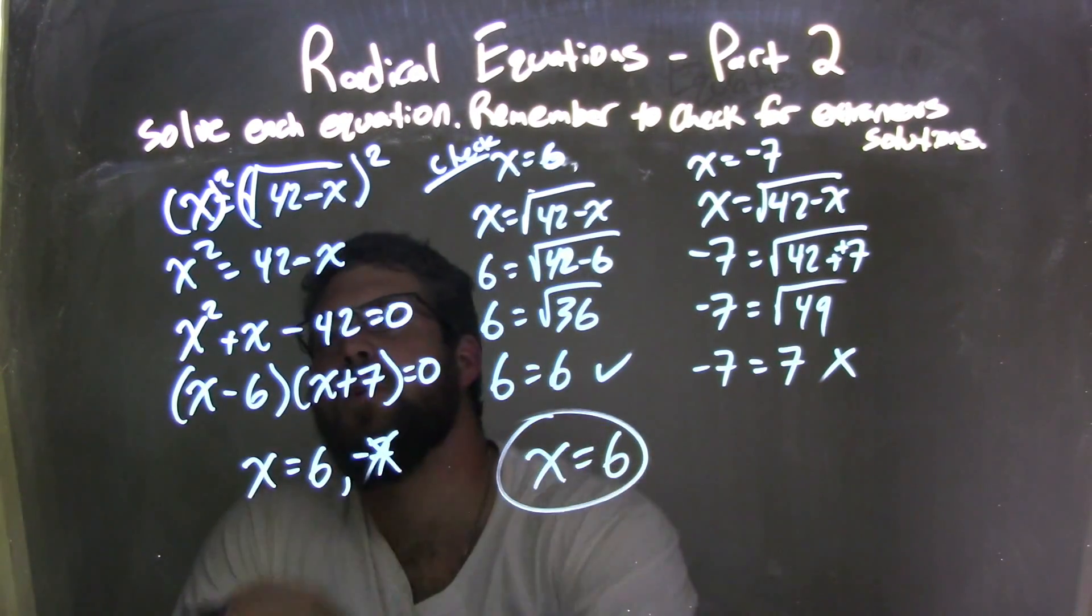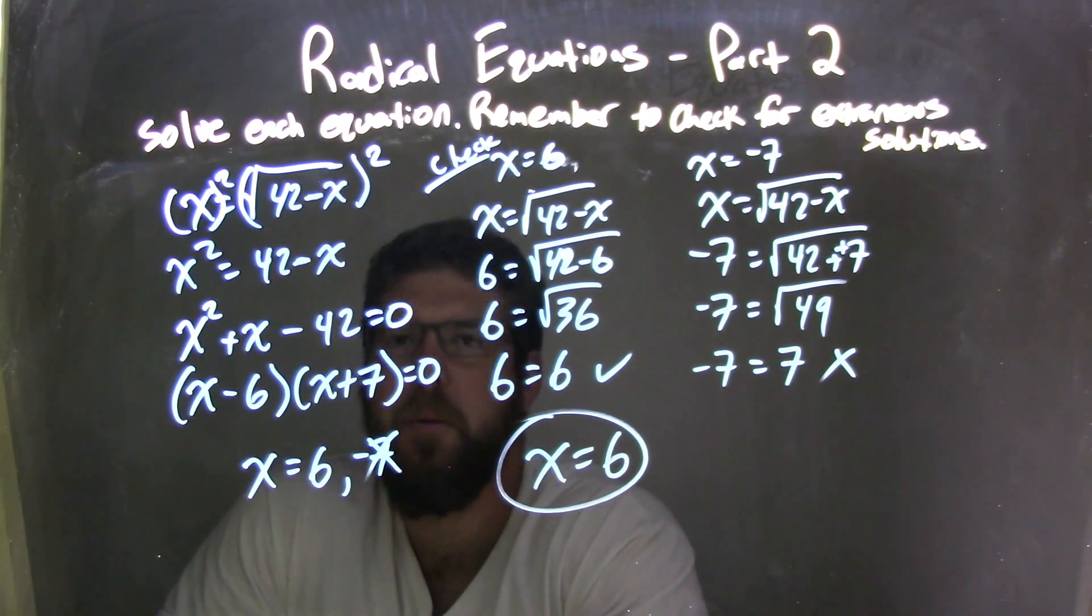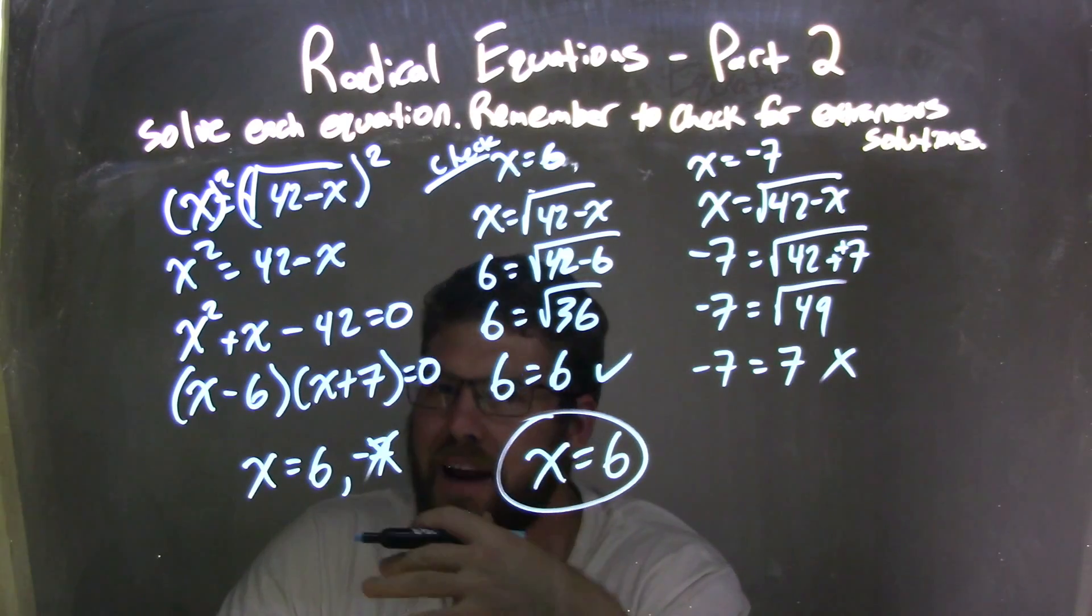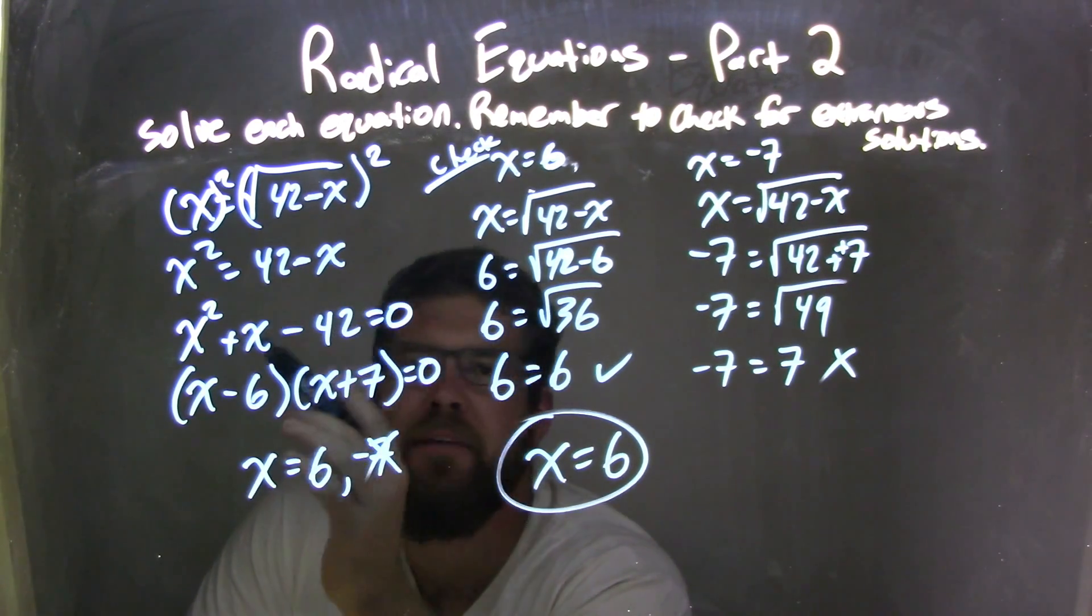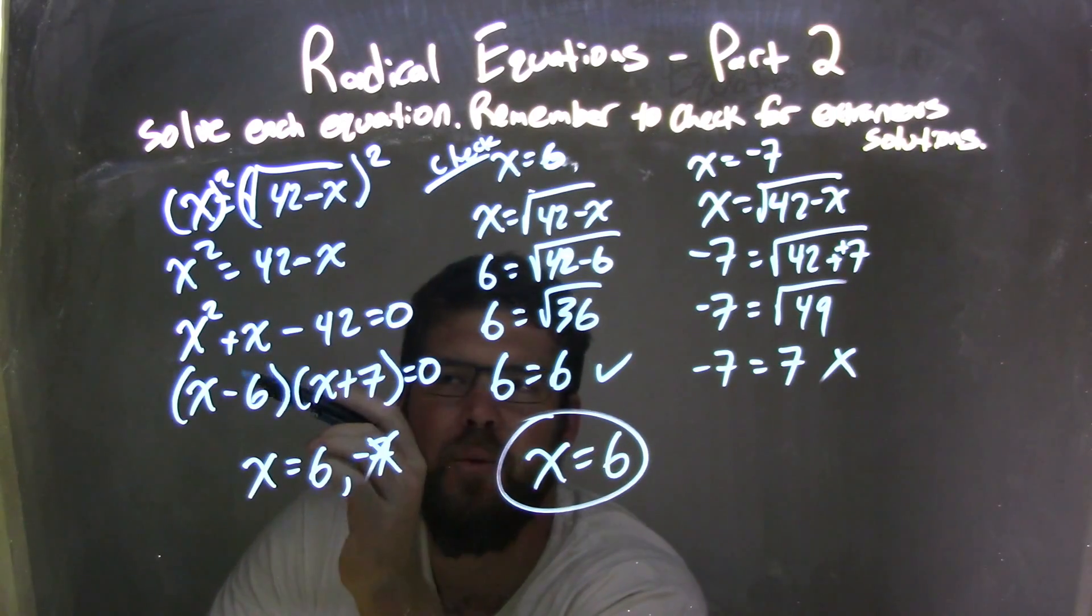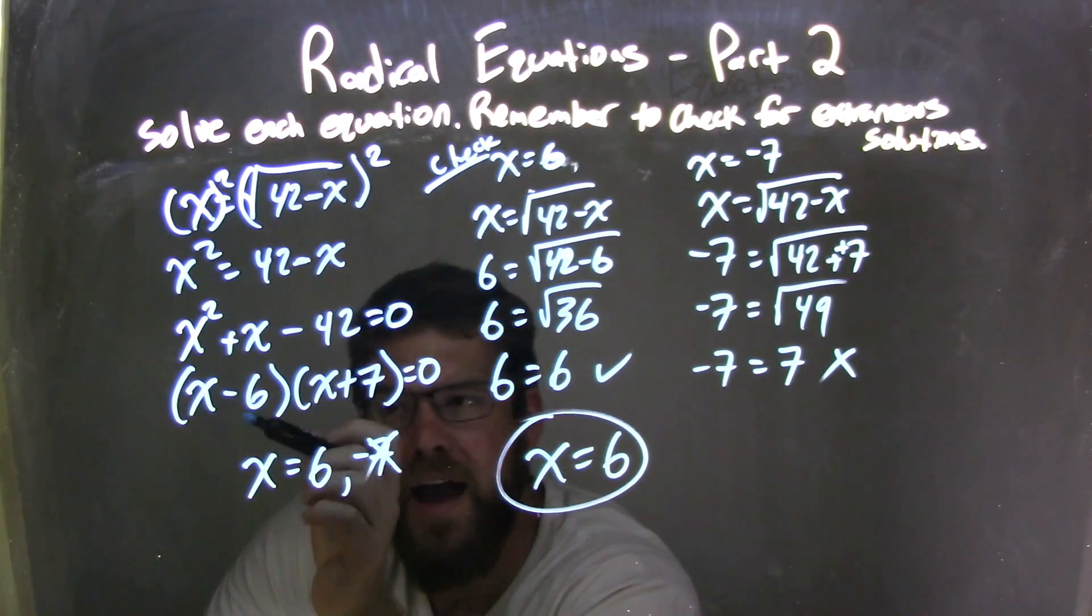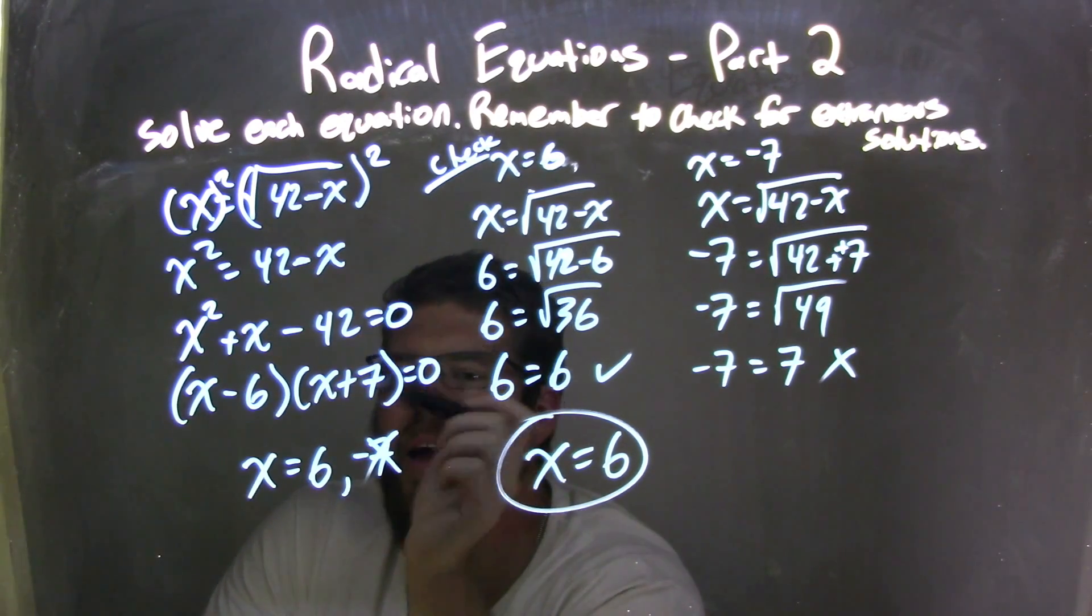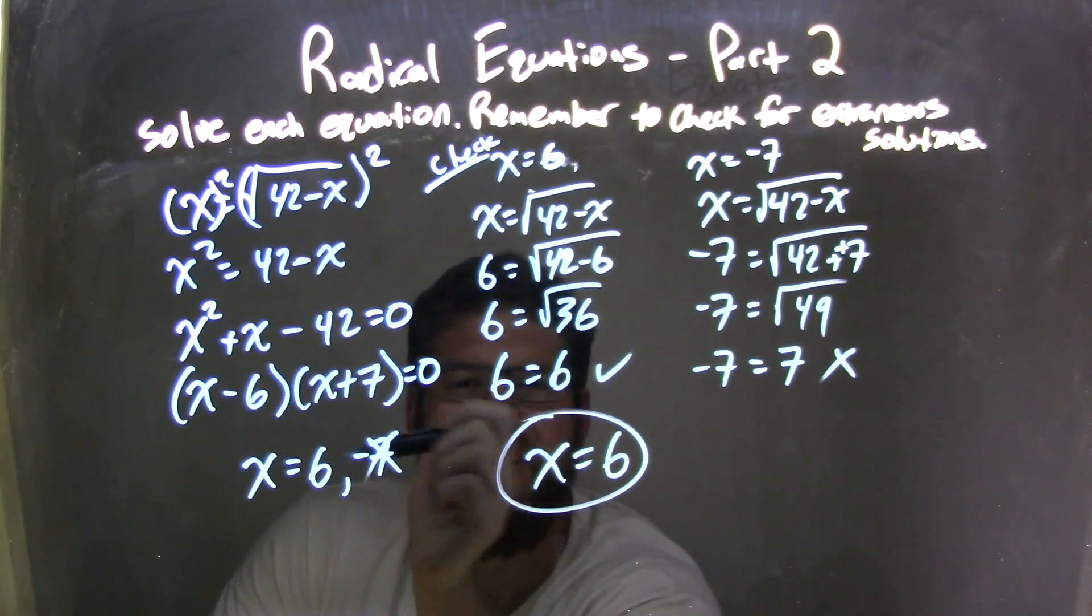We started with x equals the square root of 42 minus x. I squared both sides to eliminate that radical. From there, I brought everything over and had x squared plus x minus 42 equals 0. Then I factored: x minus 6 times x plus 7 equals 0. That gave me two answers: 6 and negative 7.